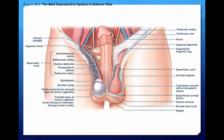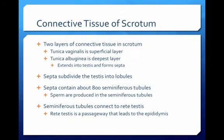On this diagram, identify the scrotum, dartos muscle, cremaster muscle, prepuce, testes, epididymis, and spermatic cord. There are two layers of connective tissue in the scrotum. The more superficial connective tissue of the testes is called the tunica vaginalis. The deeper connective tissue is called the tunica albuginea. The tunica albuginea has fibers that are continuous with the fibers of the surrounding epididymis. Fibers from the tunica albuginea also extend into the testes and form partitions called septa.